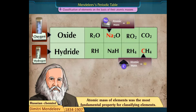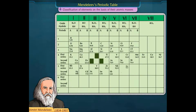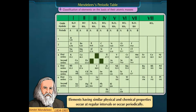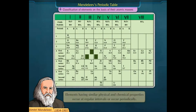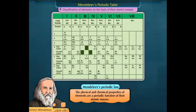Mendeleev arranged elements in the order of their increasing atomic masses and observed that elements having similar physical and chemical properties occur at regular intervals, or occur periodically. This observation was stated as Mendeleev's Periodic Law: the physical and chemical properties of elements are a periodic function of their atomic masses.